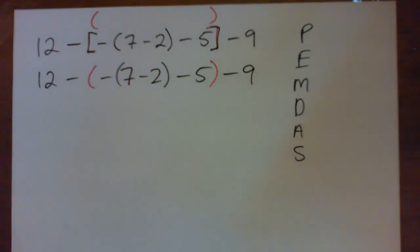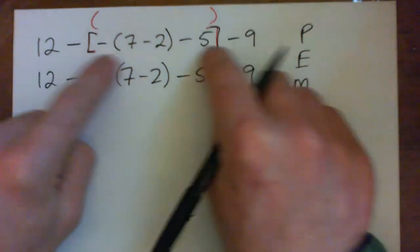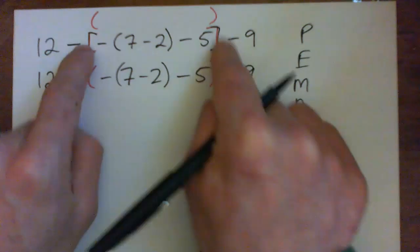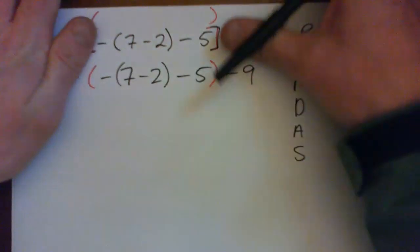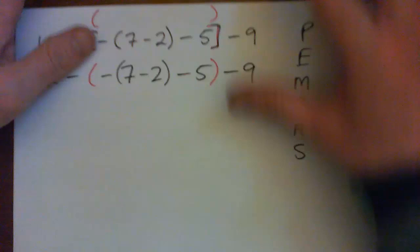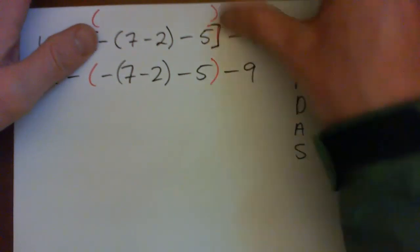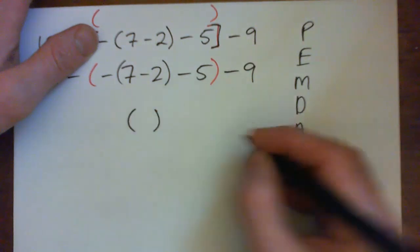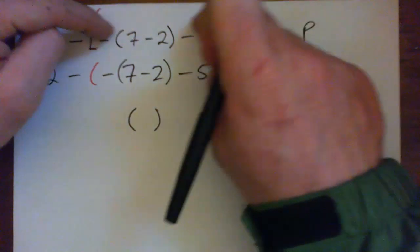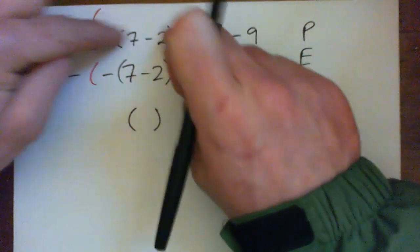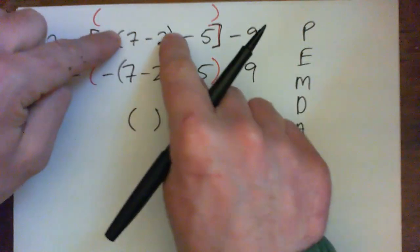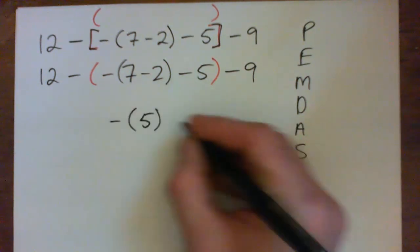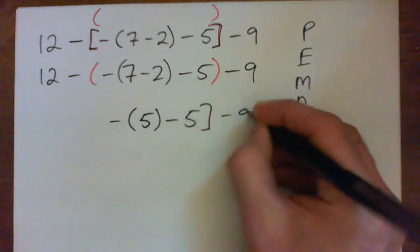So we do the innermost parentheses first, right? We have to do what's inside the square bracket. And if we go inside the square bracket, we've got a negative 7 minus 2 and then a negative 5. So we have to actually go inside the 7 minus 2 first. That's actually our first step. You go inside the square brackets and inside there we find we have these parentheses, so you have to do 7 minus 2 first, which makes 5. And then just write the whole thing out, you know, be patient, write it out, fill it all out.